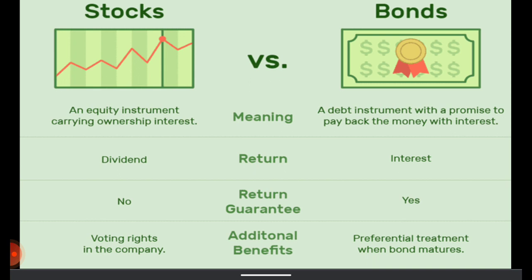Bond holders don't have voting rights in the company, but they do have preferential treatment when the bond matures or when the company is wound up. For example, if the company is dissolved and has assets of $100, those $100 will be paid to bond holders first, and only if there is anything left will it be paid to stockholders. Similarly, when bonds mature, bond holders receive their money on preferential terms before stockholders.